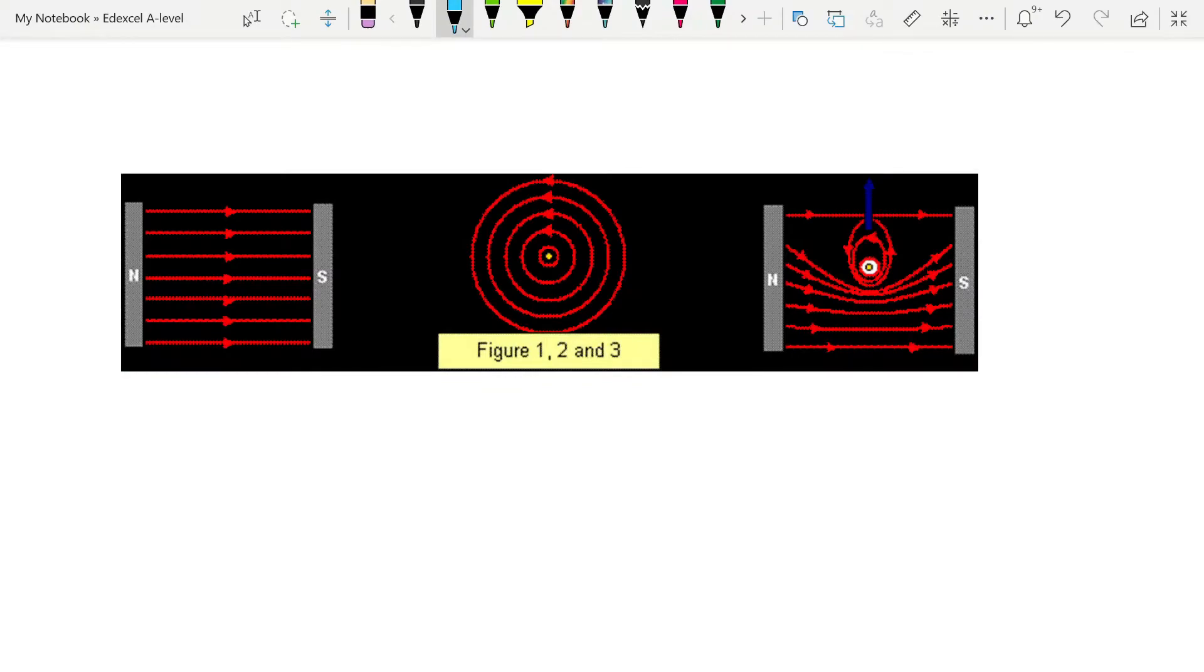If you then take this wire and you put it inside a fixed magnetic field, a permanent magnet, obviously you have interaction between both magnetic fields now. We know that when you put two magnetic fields together there's a force.